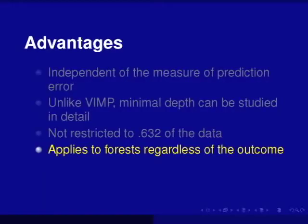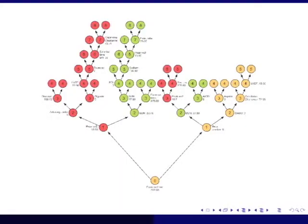And it applies to forest regardless of the outcome. In fact, if you look at this previous tree, I said this was a survival tree, but you really couldn't tell that this was a survival tree, right? It just splits left and right, but there's no outcome on that. Minimal depth doesn't use that information. The outcome is actually used to construct the tree.